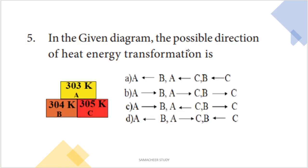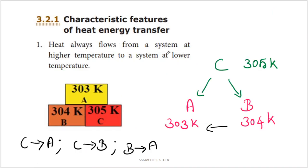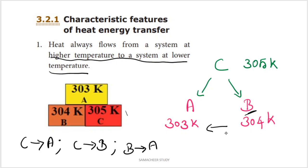Next question: in the given diagram, the possible direction of heat energy transformation. The diagram shows three different substances at different temperatures in Kelvin. The concept is: heat always flows from a system at higher temperature to a system at lower temperature. Among the three substances, C has the highest temperature, B is intermediate, and A has the lowest temperature.